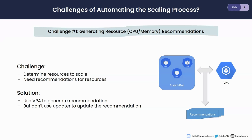To solve this, we can use the Kubernetes Vertical Pod Autoscaler (VPA) to generate only the recommendations. VPA has two main components: the recommender and the updater. The recommender generates resource recommendations and the updater acts on them to scale the workloads. We can turn off the updater using the VPA spec so VPA doesn't update the workloads directly — we only need the recommendation generated by VPA, which we then use to vertically scale our database.